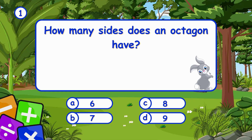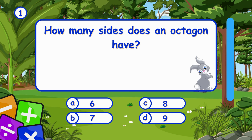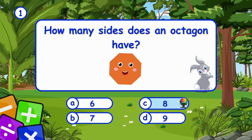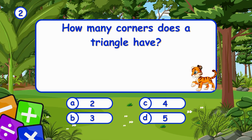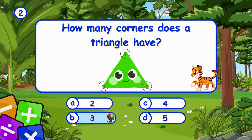How many sides does an octagon have? It's C, 8. An octagon has 8 sides. How many corners does a triangle have? It's B, 3. A triangle has 3 corners.